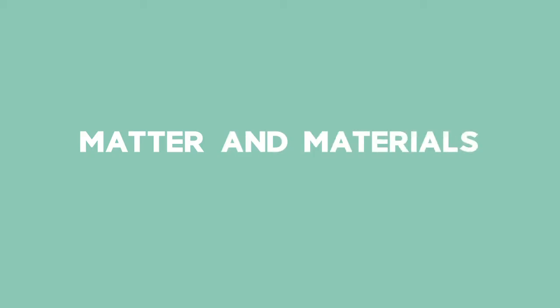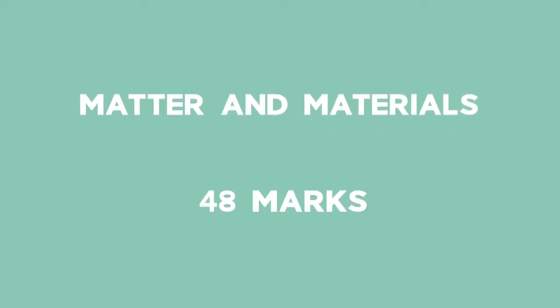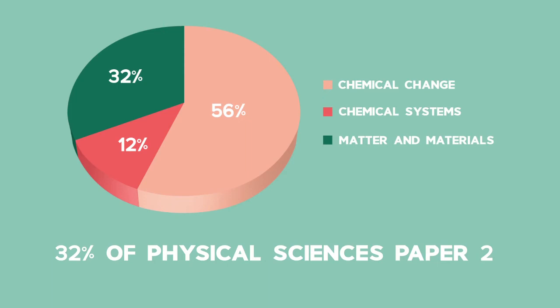Matter and materials is roughly 48 marks in the final exam which is 32% of Physical Sciences Paper 2.